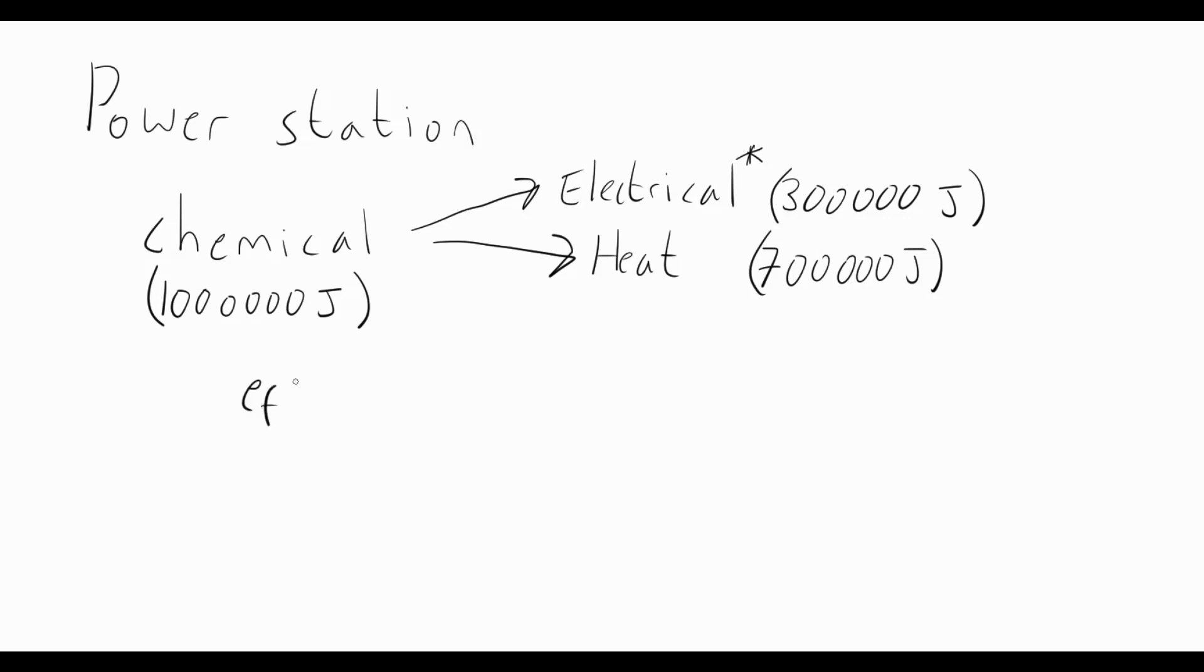So we get 300,000 electrical and we get 700,000 joules of heat. So using the equation, if you remember the equation, we say that efficiency equals the useful energy out of something divided by the total energy in. And we want to convert that to a percent, so we multiply that by 100 and we put a percent sign on there. Well, let's work this one out. So we've got basically 300,000 joules of useful energy divided by 1 million joules of the total energy that went in.